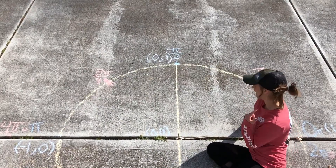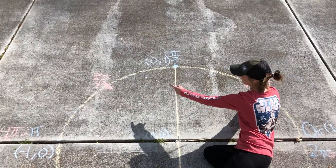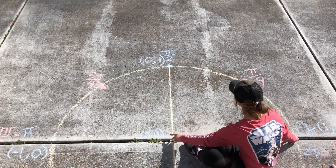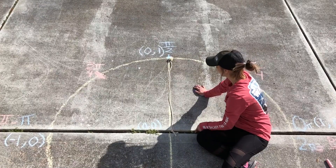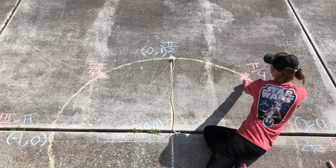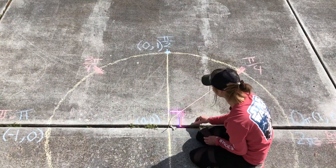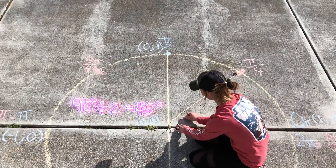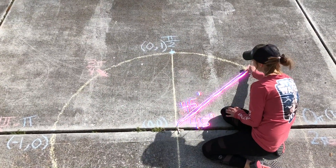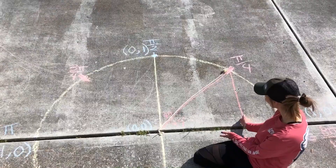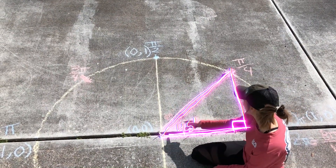What if I don't want to stop on just the quadrantals? What if I want to stop somewhere in between — how would I find the coordinates for those points? I know that rotating pi over 2 radians is 90 degrees. So if this is pi over 4 radians, that's just halfway in between my 90 degrees — 45 degrees here and 45 degrees here. I wonder if I could make a right triangle, because we have so many properties with those.